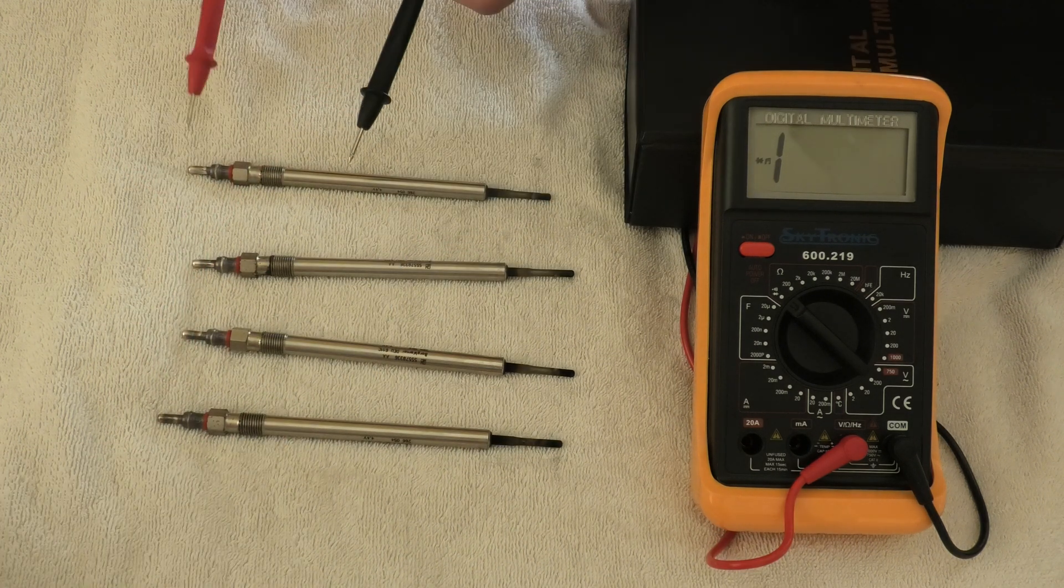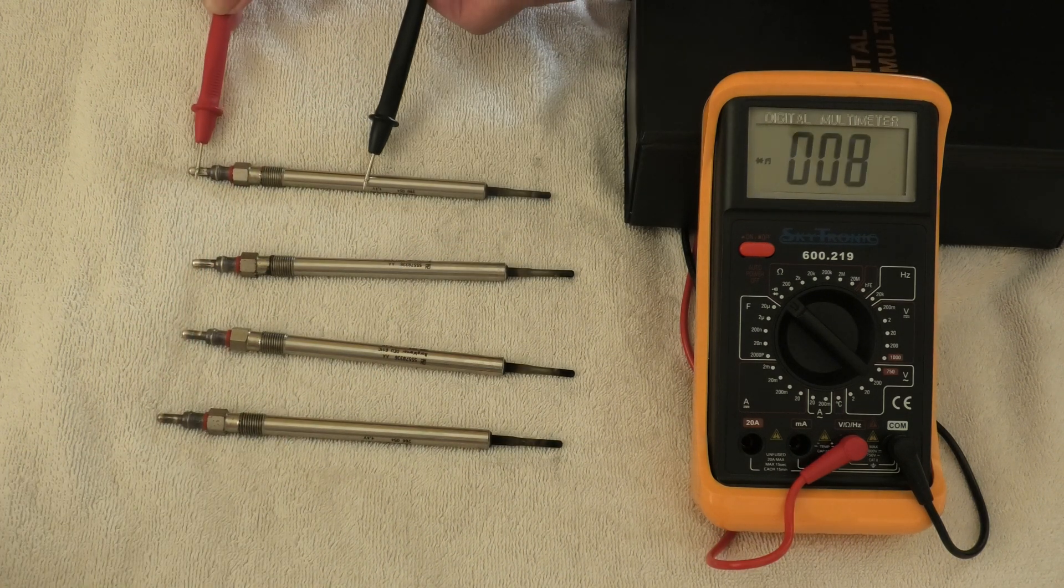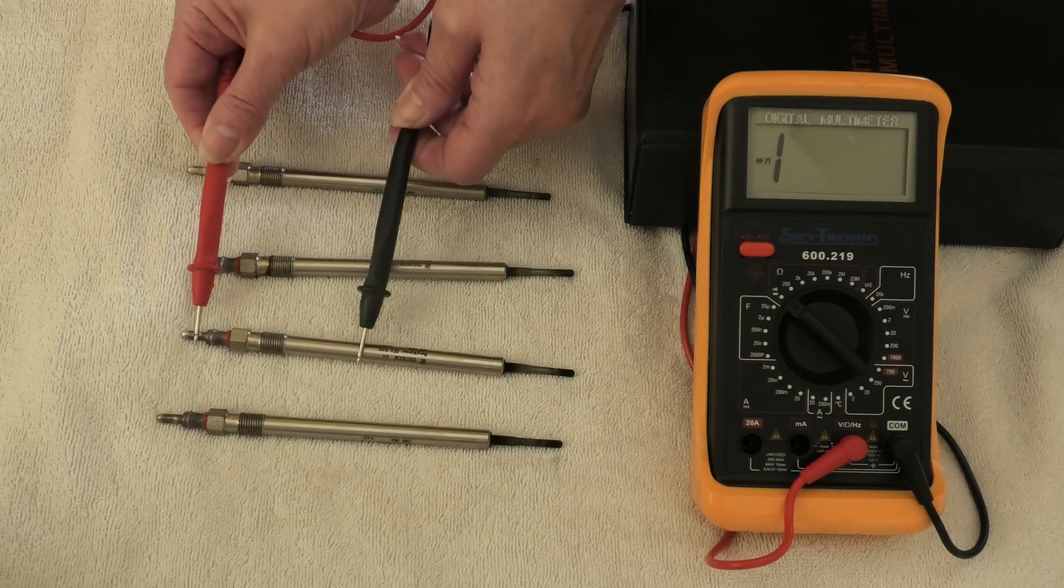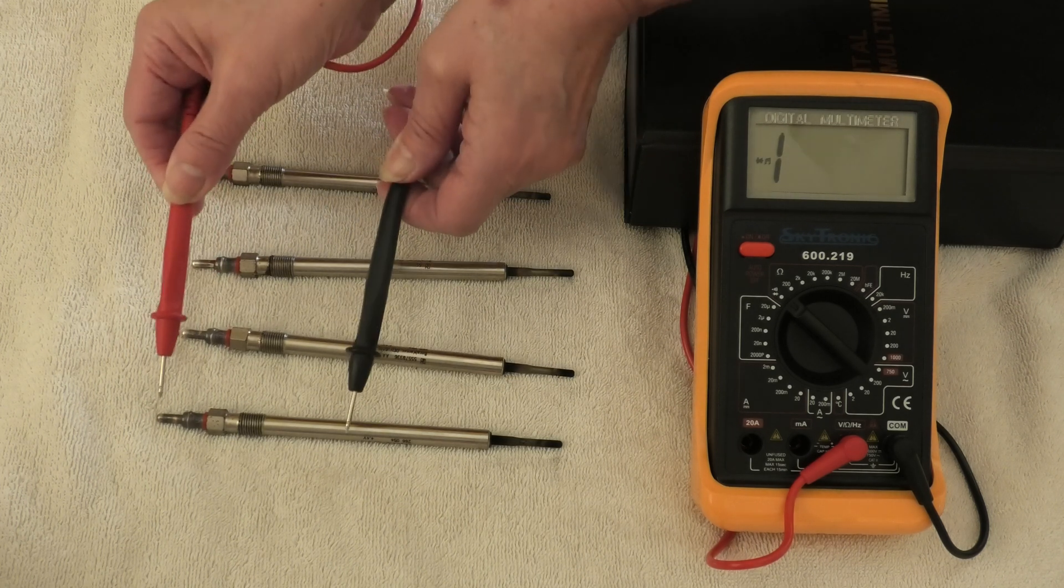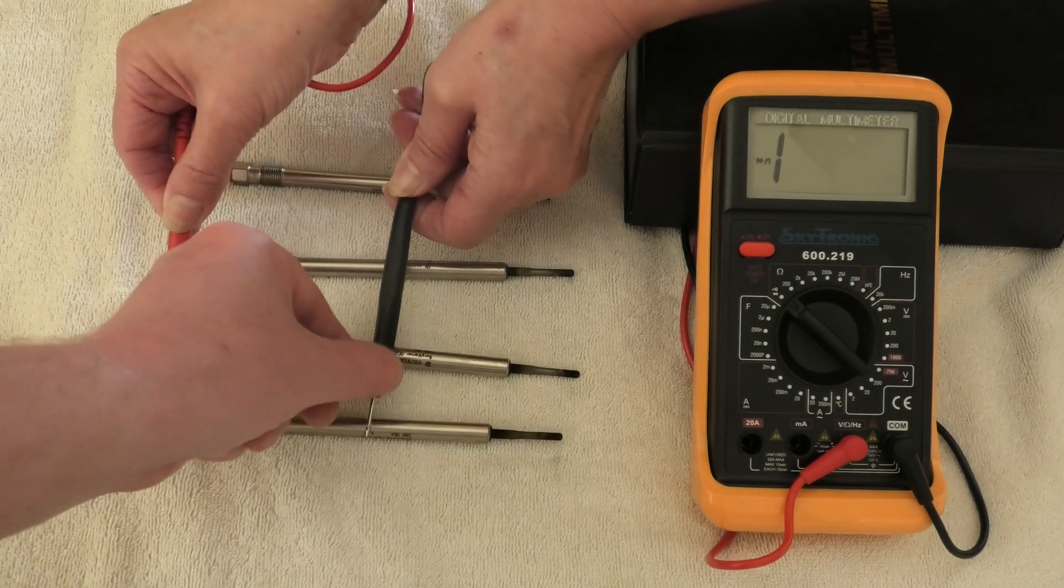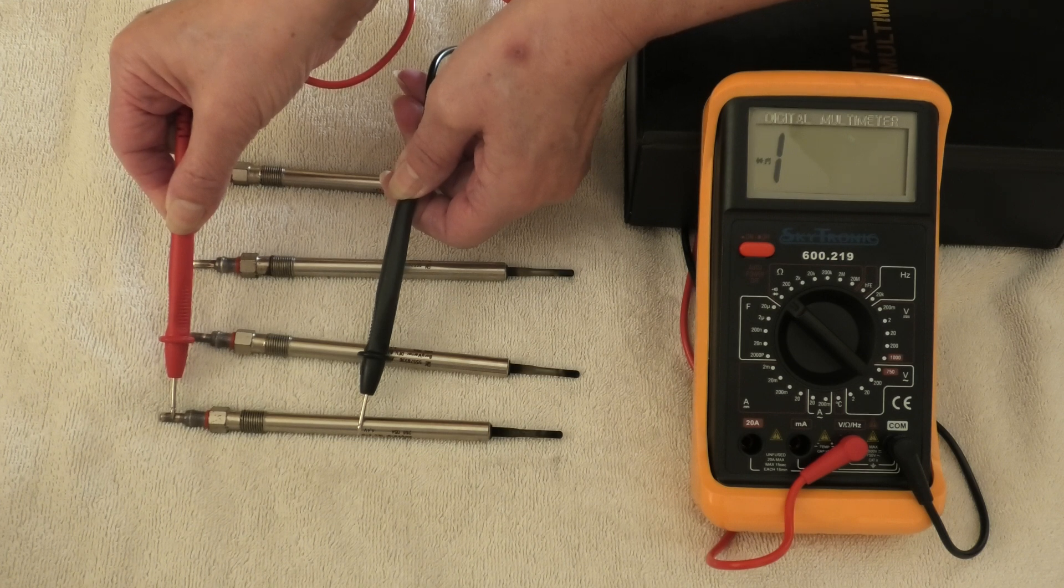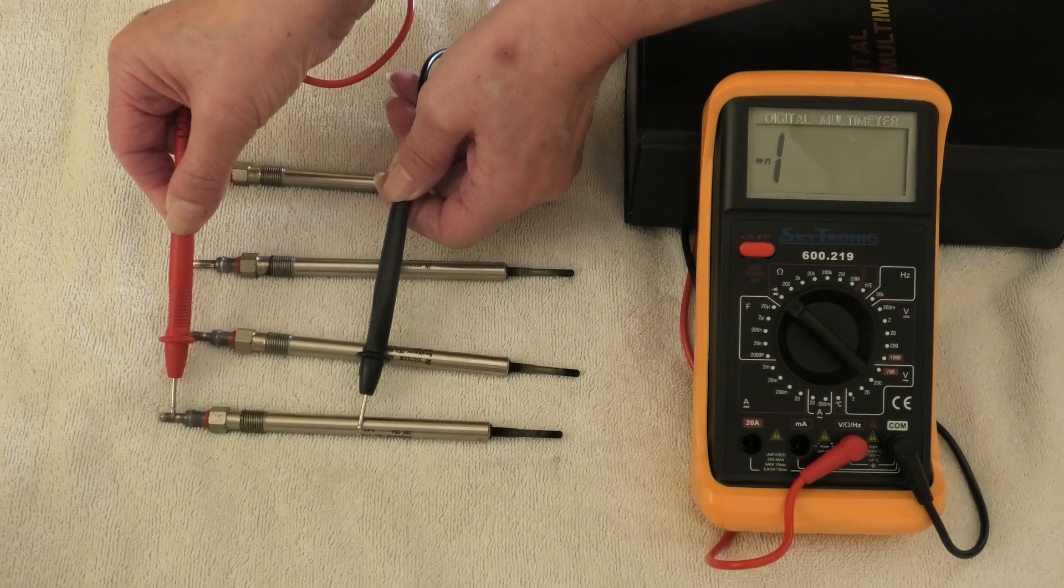So there you go, there you go, and this here you can see we're pushing hard. That is a faulty glow plug. So that is how you test glow plugs to see if they're faulty.